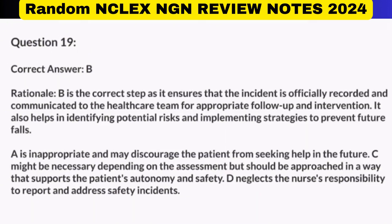Correct answer: B. Rationale: B is the correct step as it ensures that the incident is officially recorded and communicated to the healthcare team for appropriate follow-up and intervention. It also helps in identifying potential risks and implementing strategies to prevent future falls. A is inappropriate and may discourage the patient from seeking help in the future. C might be necessary depending on the assessment but should be approached in a way that supports the patient's autonomy and safety. D neglects the nurse's responsibility to report and address safety incidents.